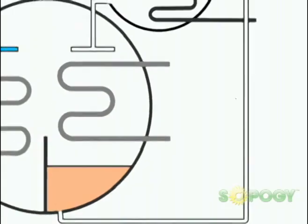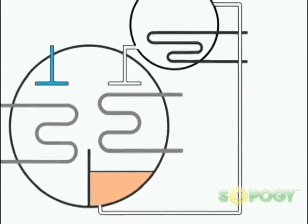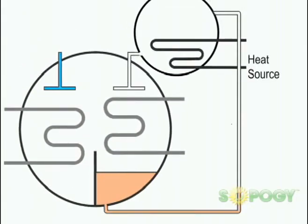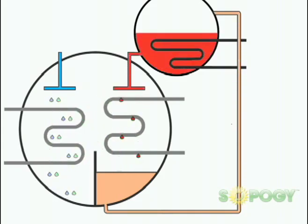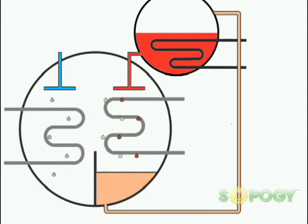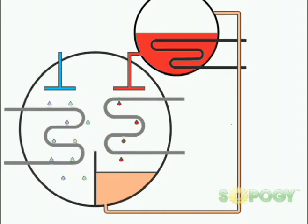It therefore needs to be re-concentrated using a heat source. This leads to the vaporization of the refrigerant, and thus the solution is restored to its original concentration. The cycle keeps repeating itself to give the desired chilling effect.